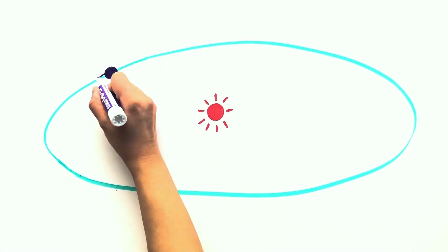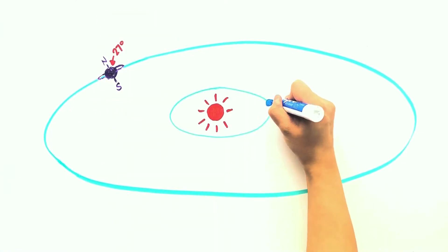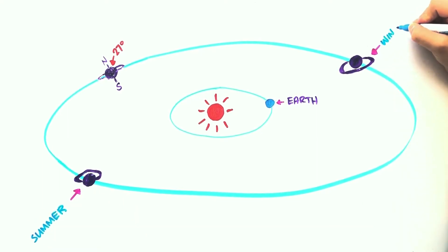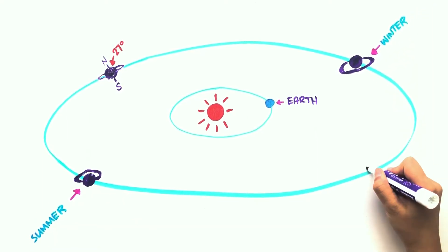Saturn is tilted about 27 degrees and has seasons similar to Earth, but these seasons last almost 30 times longer because of how far away it is from the Sun. This tilt changes your viewing perspective of the rings. When the rings are tipped up or down to you, Saturn's rings become more visible and corresponds with the planet's summer and winter seasons. But when the rings are tipped away from you, the rings are harder to see and it marks the planet's spring and fall.